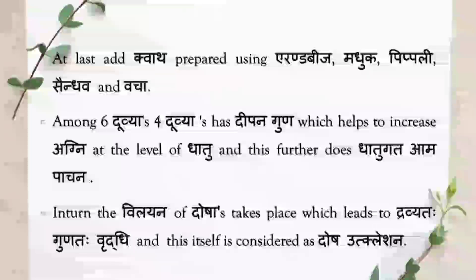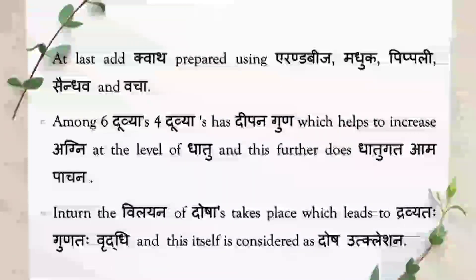Among the six dravyas, four dravyas have Deepanaguna, which helps to increase the Agni at the level of Dhatu, and this further does the Dhatu Gata Amapachana. In turn, the Vilayana of Doshas takes place, which leads to Dravyataha Gunataha Pridhi, and this itself is considered as Dosha Utkleshana. Here Vilayana means liquefaction of the Doshas.